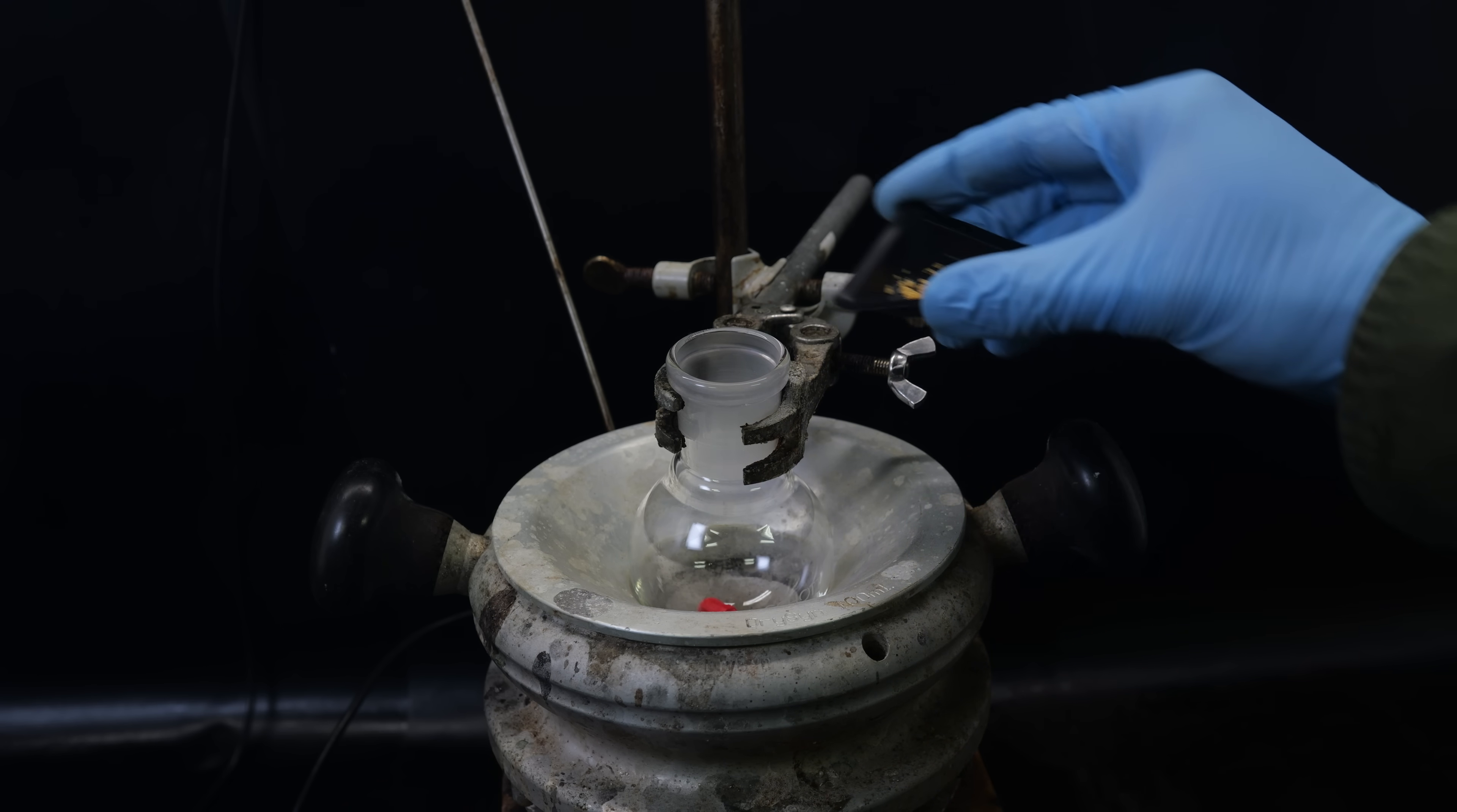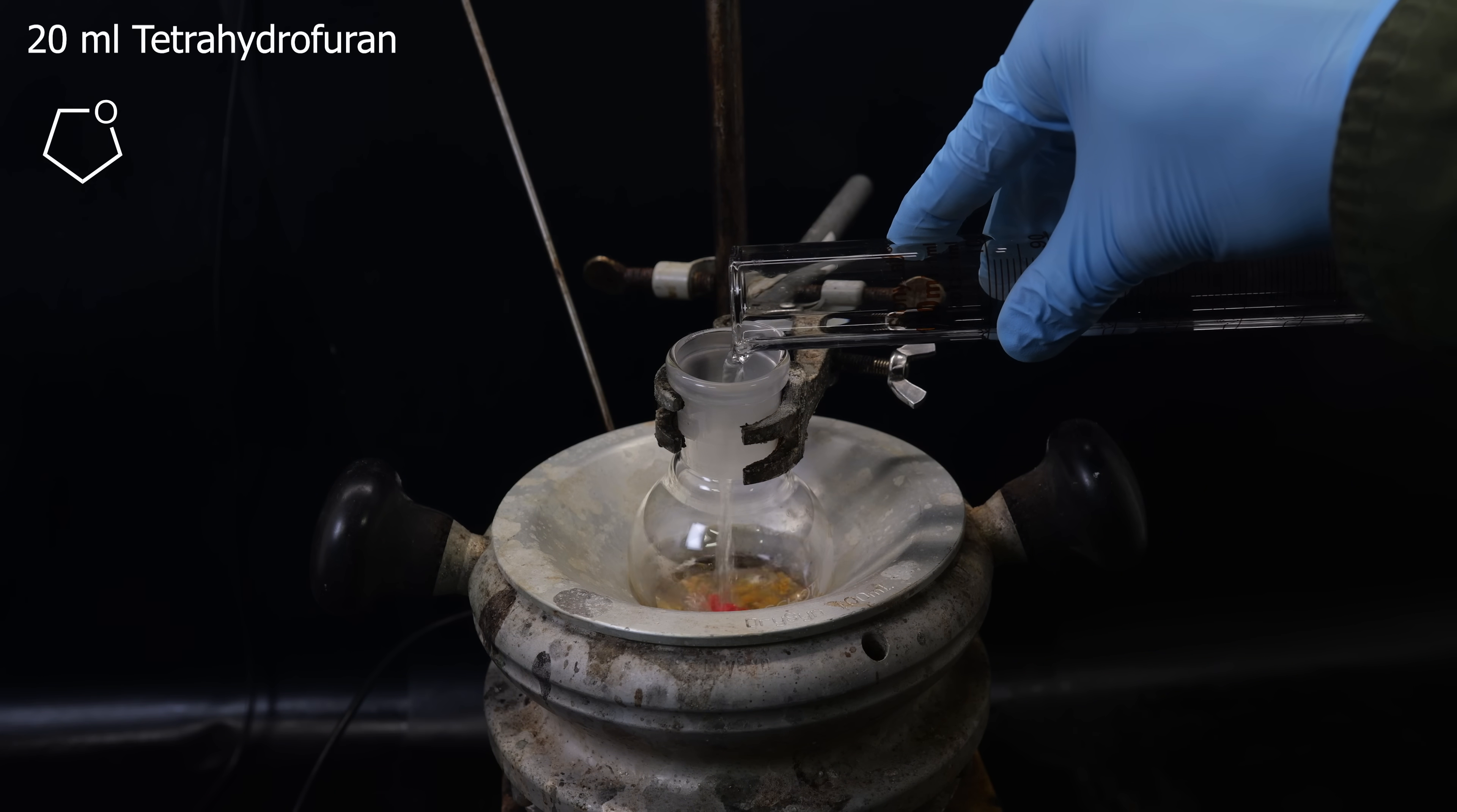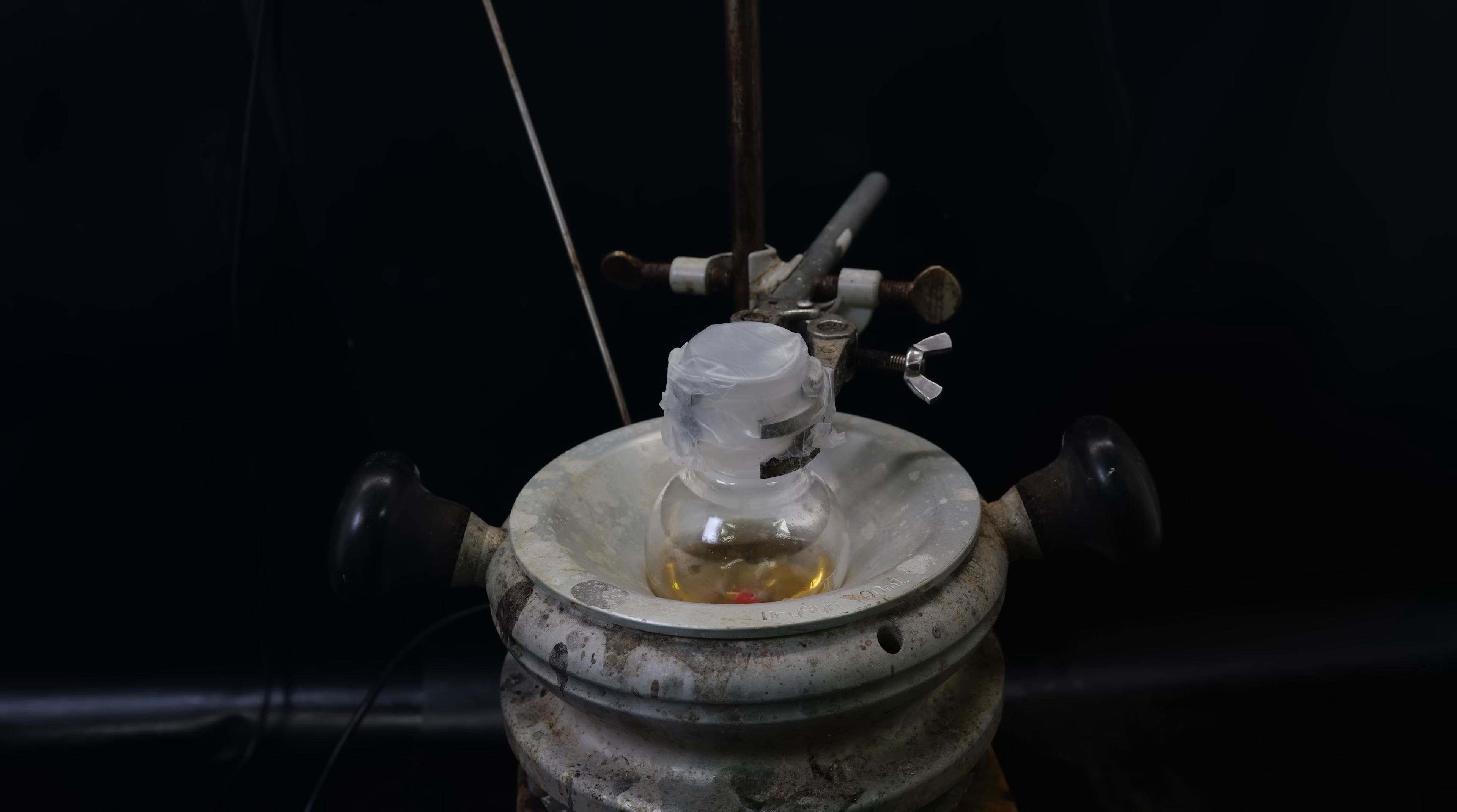So to get started, I set up a flask with a stir bar, into which I add 0.2 grams of androstadienone. I dissolve this in 20 mls of the solvent tetrahydrofuran, and then add in 60 milligrams of the reducing agent lithium aluminum hydride. I cover the flask in parafilm, and then allow it to stir for a day at room temperature.